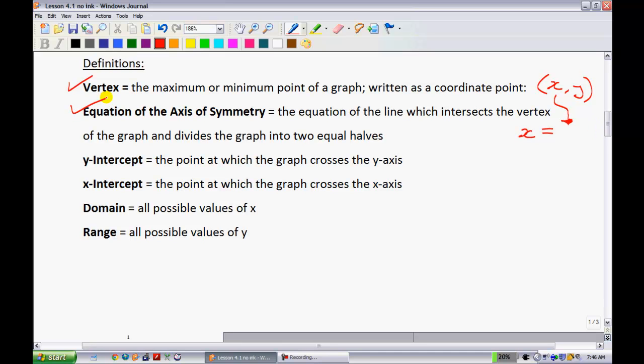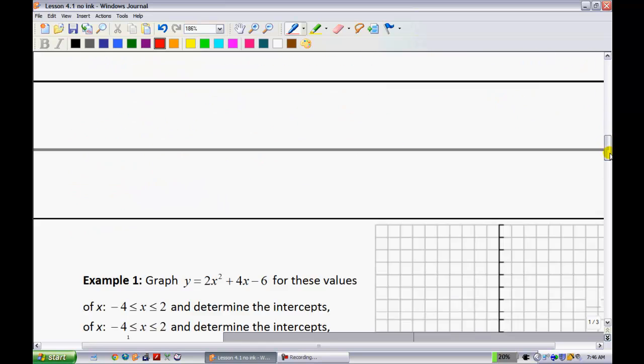What else are we doing? We have the y-intercept. That's just where the graph crosses the y-axis. Pretty obvious. Same with the x-intercept. And we talked about domain and range. Head to the next page.